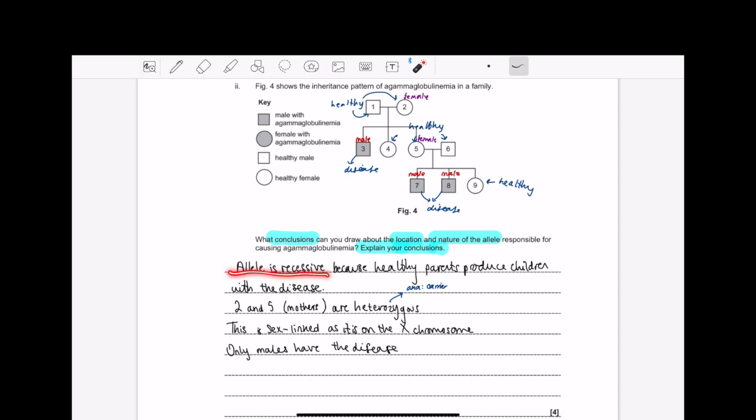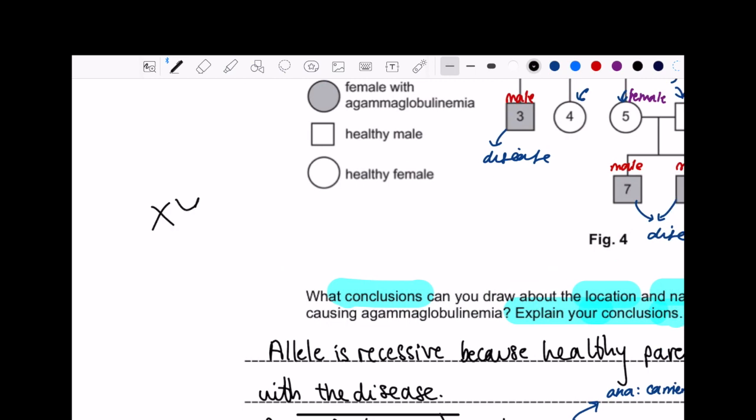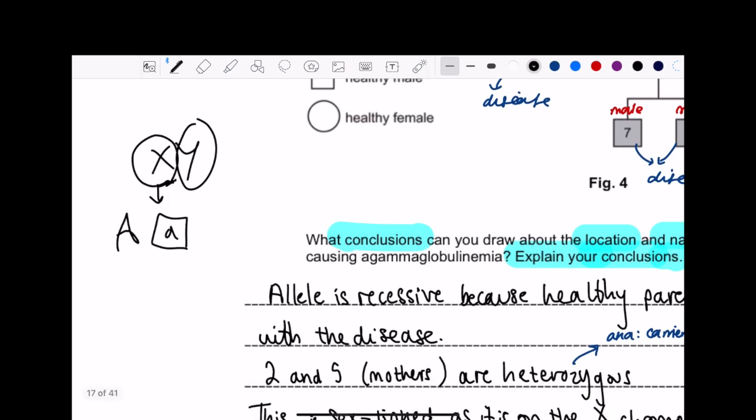I said the allele is recessive. What does recessive mean? It means that it needs essentially two copies for that characteristic to manifest. But when it comes to a male, we have X, Y. Y doesn't carry anything. So if X is recessive, let's say lowercase a, then that characteristic will be expressed because there is no capital A to cancel it out. Unlike with females, whereas XX, there is a chance that this could be capital A and lowercase a, and in that sense, they won't get the disease. However, if it was both lowercase, then this is diseased.